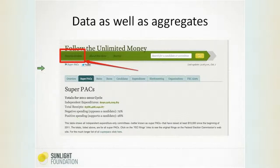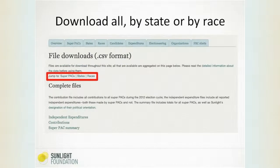Another feature of this site, in addition to providing context and the big picture, is that you can drill down into the numbers and get the raw data from the FEC through this site in pretty much one easy step. When you click on that download box in the green, you get to a place where you can download data in a whole bunch of different formats. You can download data by individual super PACs, by states, or for particular races. So if you want to see how much is being spent in the Virginia Senate race, or in the Sherman-Berman race out in California — a highly contested house race — or any other race, you can download this file and get it.